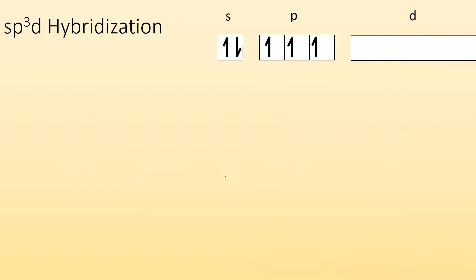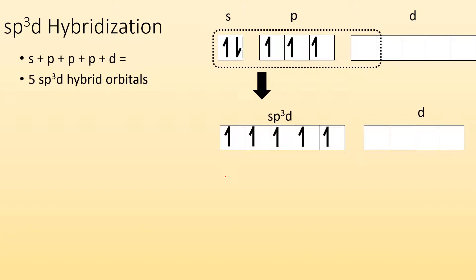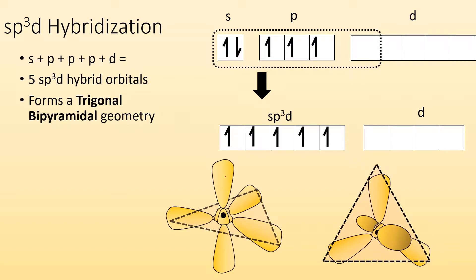For sp3d hybridization, a single s with three p's and a d orbital are hybridized together, and we make five hybrid orbitals called sp3d hybridized. This forms a trigonal bipyramidal geometry. With five domains, you end up with a trigonal bipyramidal geometry — there's a triangle along the equator and then a north and south pole, giving us two triangular pyramids: trigonal bipyramidal.